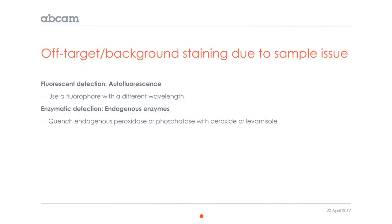Regarding background staining, due to a sample issue, if you're using a fluorescent detection and you just look at a tissue section without any staining, you might see some autofluorescence, which obscures the signal you're trying to detect for the protein of interest. This usually happens in the green channel, so you may want to try moving to a fluorophore with a different wavelength — substituting a secondary antibody conjugated to a red fluorochrome might address the issue.